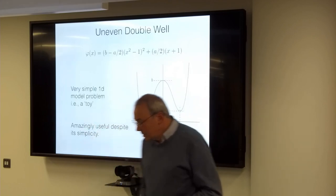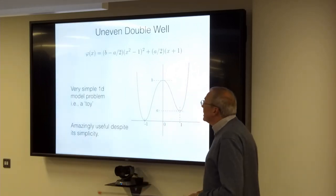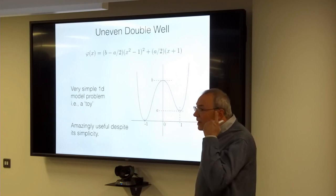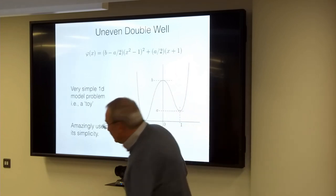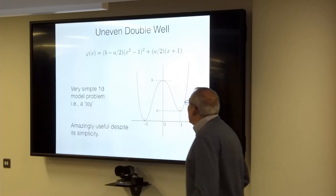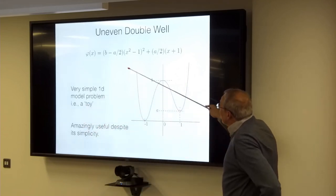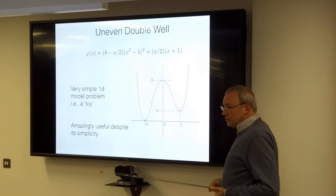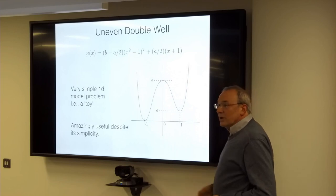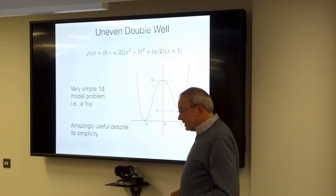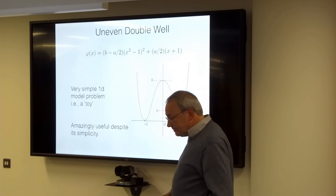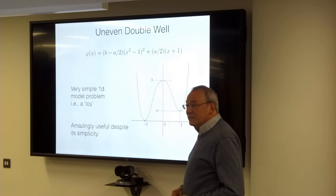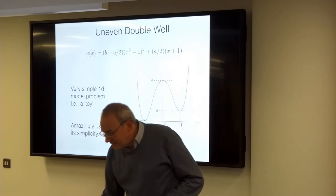To make things more straightforward, let's look at the uneven double well, which is already a really good model for many sampling problems. You can play with this toy — it has parameters that allow you to adjust the shape. This would be the U function. The first thing you should do with a new sampling method is see how it works on the uneven double well, then move on to more complicated things.